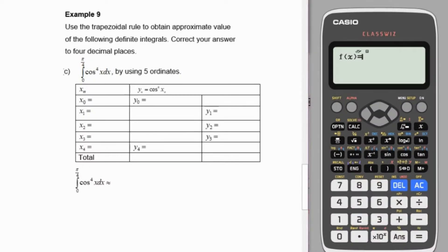Hi everyone, for example 9c, we'll integrate from 0 to π/4 for cos to the power of 4x with respect to x using 5 ordinates.